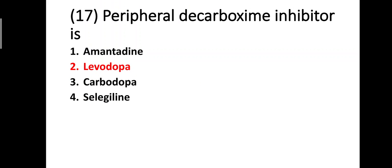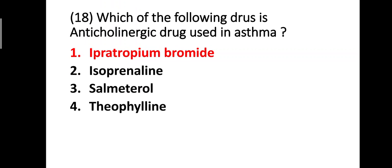Question seventeen: peripheral decarboxylase inhibitor is — option one: amantadine, option two: levodopa, option three: carbidopa, option four: selegiline. The correct answer is carbidopa — carbidopa is the peripheral decarboxylase inhibitor.